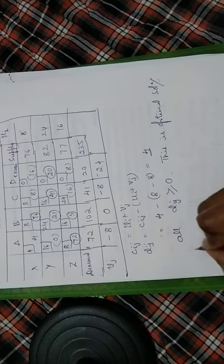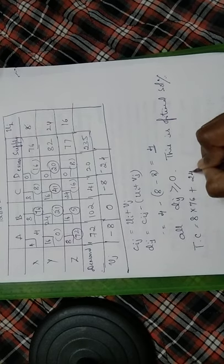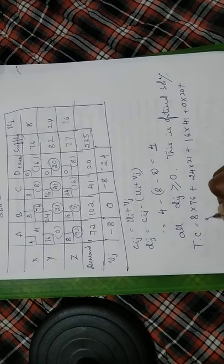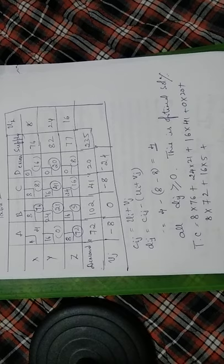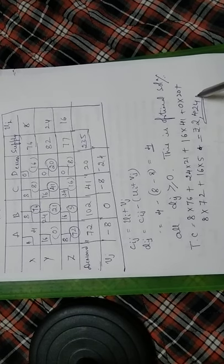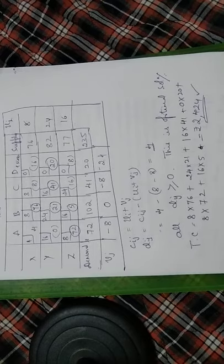We now calculate the total minimum transportation cost using the allocated cells: (8 × 76) + (24 × 21) + (16 × 41) + (0 × 20) + (8 × 72) + (16 × 5) = ₹2424. This is the least cost the company can attain with this allocation schedule.